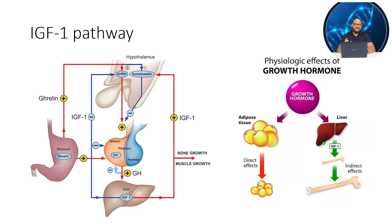This JAK family of kinases is involved in diverse physiological actions such as hematopoiesis, immunity, development, and growth. JAK2/STAT activation leads to production of insulin-like growth factors, including IGF-1, and their release into the circulation.